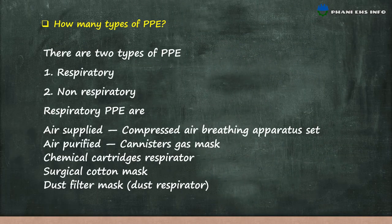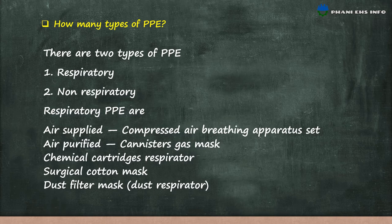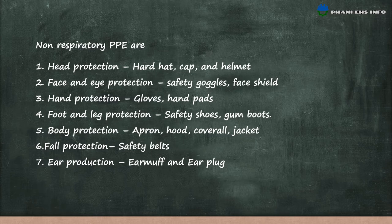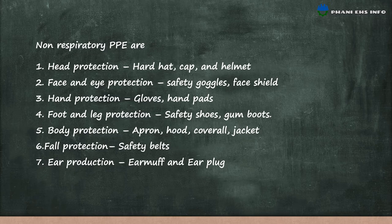How many types of PPE are there? There are two types: respiratory protection and non-respiratory protection. Respiratory protection includes air-supplied, air-purified, chemical cartridge respirators, surgical cotton mask, and dust filter mask. Non-respiratory PPE includes head protection such as hard hat, cap and helmet; face and eye protection such as safety goggles; hand protection gloves; foot and leg protection including safety shoes; body protection such as apron, hood, and coverall; fall protection including safety belts; and ear protection such as ear muffs and ear plugs.